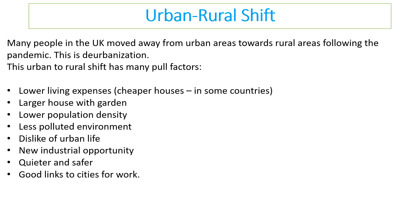In the UK, and also around the world, there is actually a shift now from urban areas back to rural areas, particularly following the pandemic. This is called de-urbanisation. Pull factors to the countryside include lower living expenses, though that's not always the case, and there's less chance to get jobs or schools, meaning fewer people want to live there and house prices may be lower.